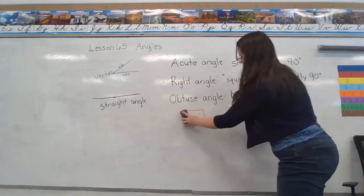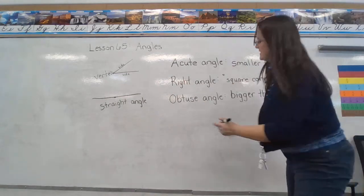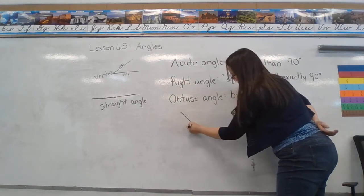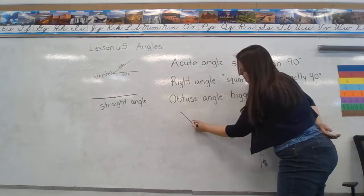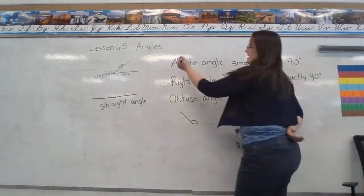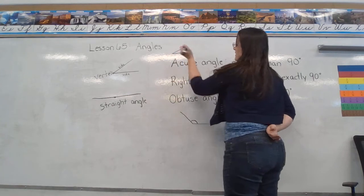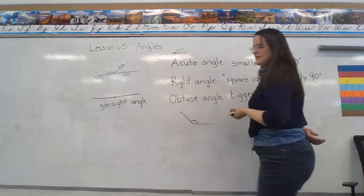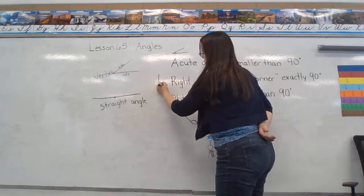So here's an example of an obtuse angle. See how big that angle is? That's obtuse. Here we have acute. And here we have a right angle.